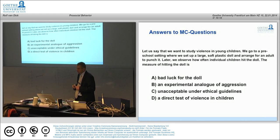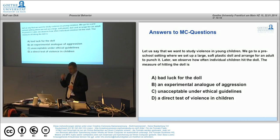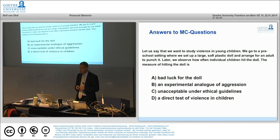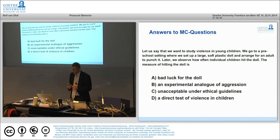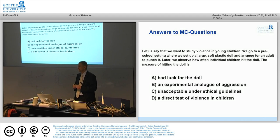Consider a study of violence in young children: we go to a preschool, set up a large soft plastic doll, and arrange for an adult to punch it — Bandura's Bobo doll research. Later we observe how often individual children hit the doll. The measure of hitting the doll is: bad luck for the doll, an experimental analog of aggression, unacceptable under ethical guidelines, or a direct test of violence in children.